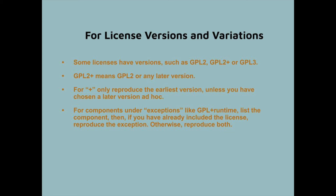Some licenses have different versions — for instance, GPL 2, GPL 3, or GPL 2 or later. GPL 2 plus means GPL 2 or any later version, and the licensee gets the choice of which version to operate under. For "plus" licenses, you only need to reproduce the earliest version unless you have specifically chosen a later version. Some licenses, most notably GPL, also have exceptions that can apply to them. For those, you should reproduce both the license and the exception — but if you've already reproduced the baseline license, all you need to do is reproduce the exception.